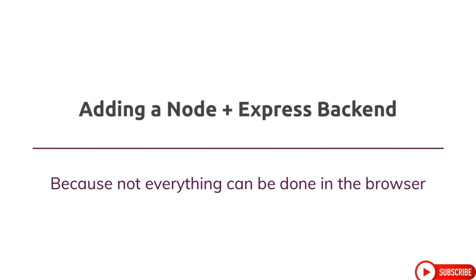Now that we added a basic Angular frontend and had a brief refresher on Angular, it's time to really make this a MEAN course and dive into at least the E and the N of MEAN. So we covered A, E, and N thus far. MongoDB will also be added soon. The E and the N part — that's Express and Node.